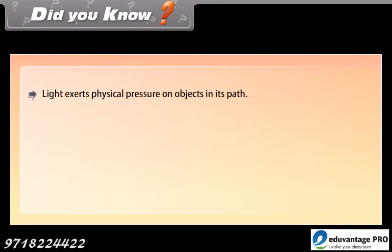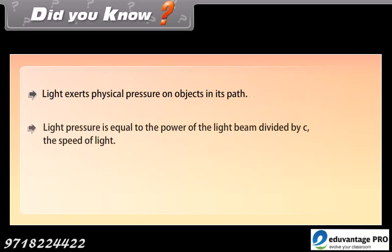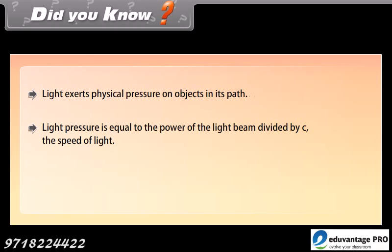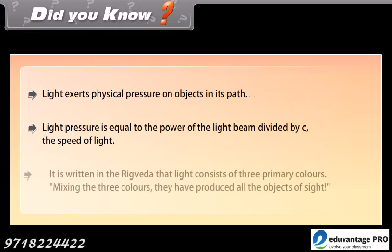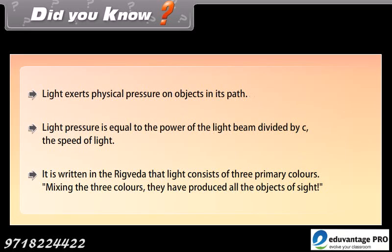Did you know? Light exerts physical pressure on objects in its path. Light pressure is equal to the power of the light beam divided by C, the speed of light. It is written in the Rig Veda that light consists of three primary colors, and by mixing these three colors, all the objects of sight are produced.